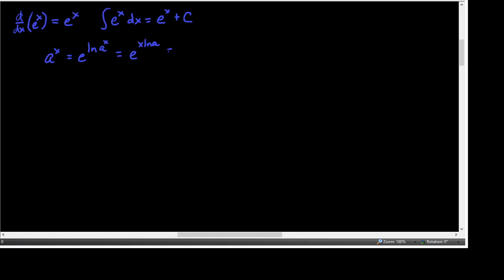And if you want to — and this is what the book does — they put the ln of a as a numerical piece, because a is a number, in front of the x, so it's a coefficient of x. That could be like e to the 2x or something like that, where ln of a is some real number.